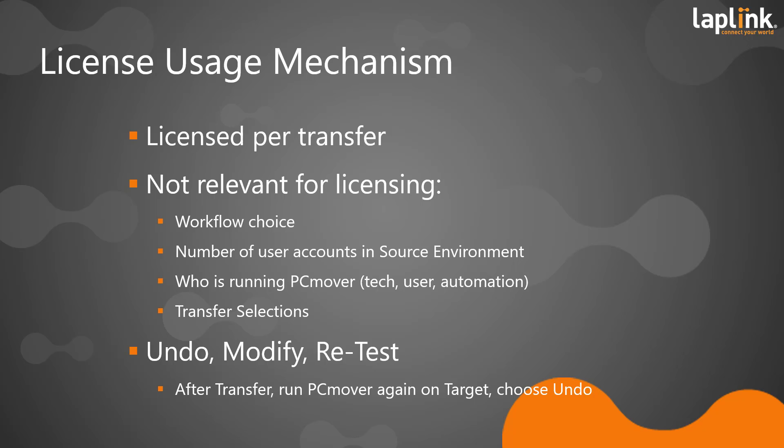The number of user accounts in the source doesn't matter — whether you have a single user on a typical PC or a conference room PC with a hundred users, it still only consumes one license to migrate that machine. It doesn't matter who's running PCMover, whether a user running self-service, a technician, or full automation. One transfer, one license. And finally, transfer selections don't matter either. The default operation encourages transferring everything possible, but even if you deselect applications, that does not change the licensing mechanism. One transfer, one license.